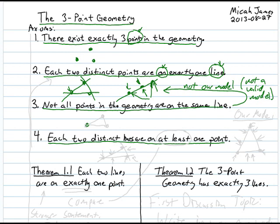So we are left with the triangle model: three points and three lines, each line containing two of the points. Axiom 4 says each two distinct lines are on at least one point, and our model satisfies this — this line and this line contain this point, these two lines contain this point, and these two lines contain this point.